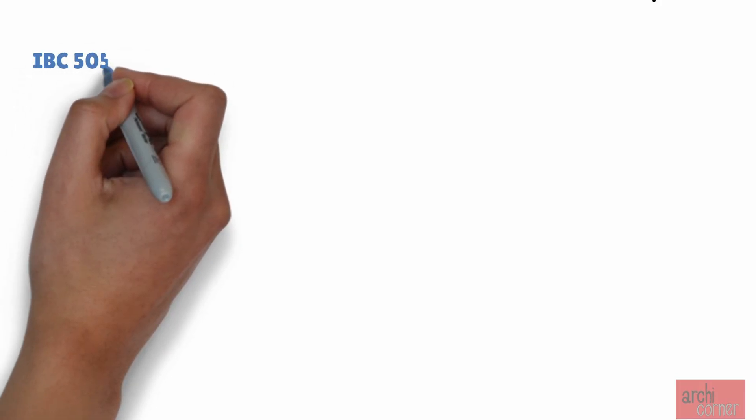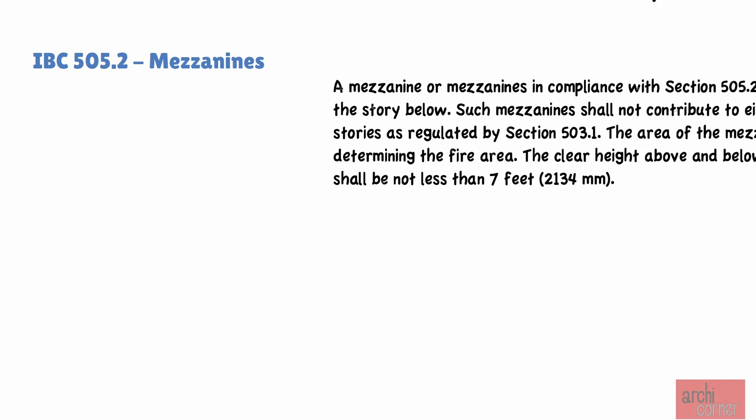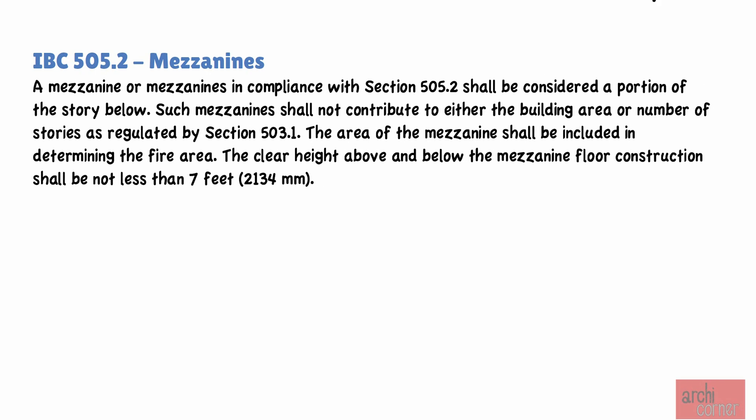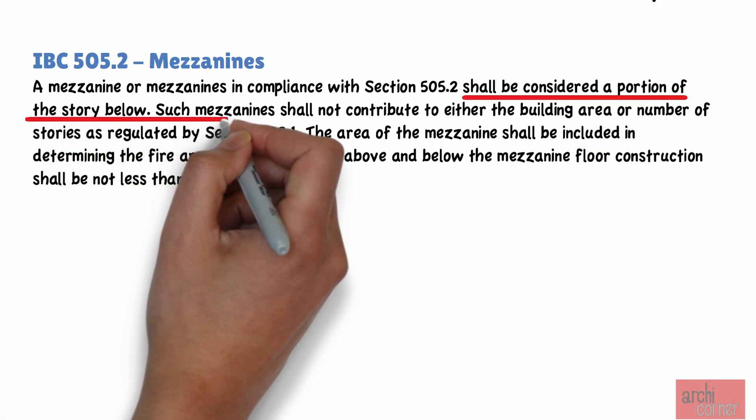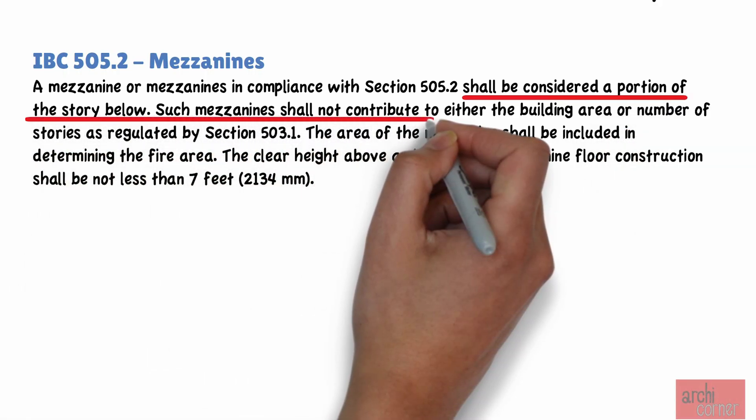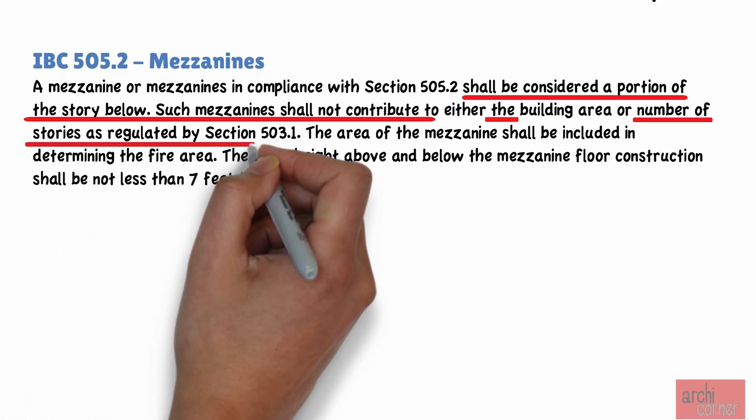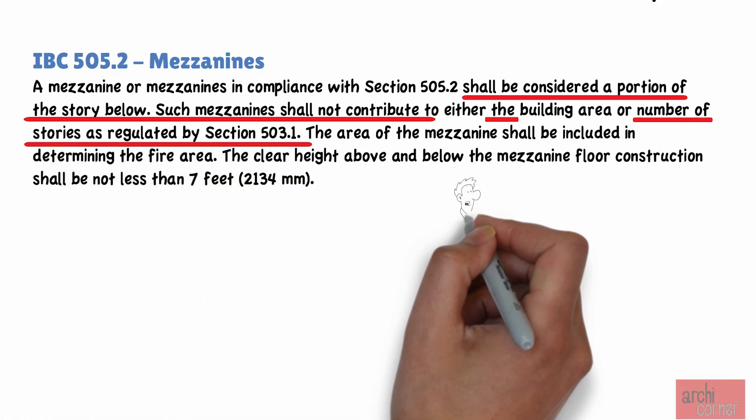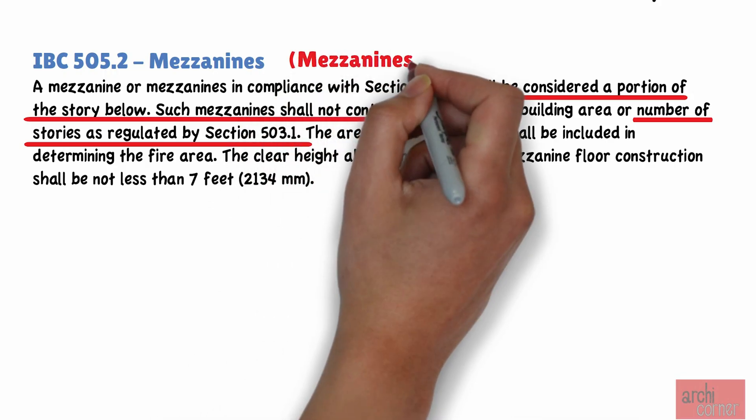First, let's look at IBC section 505.2. There are a few things we can get from this section. As we read, we can find the following: A mezzanine shall be considered a portion of the story below. Such mezzanine shall not contribute to the number of stories regulated by section 503.1. What does this mean? In short, a mezzanine is not considered a separate story.